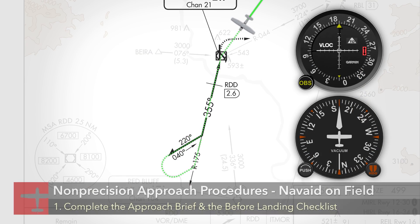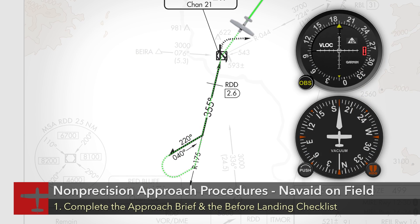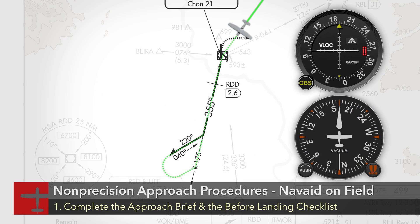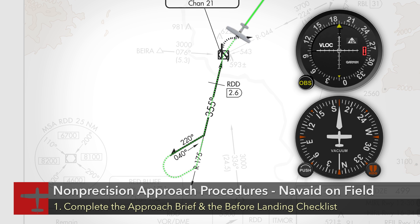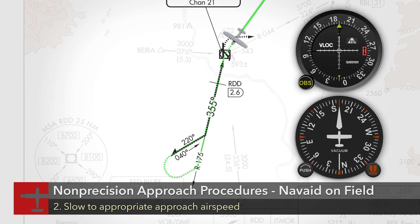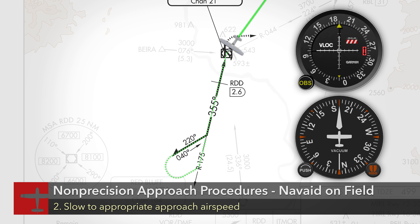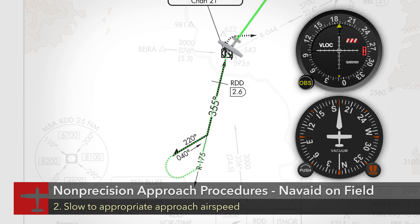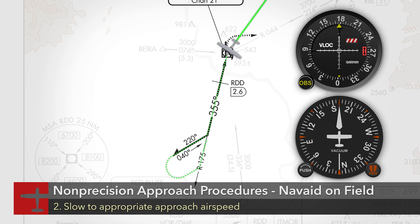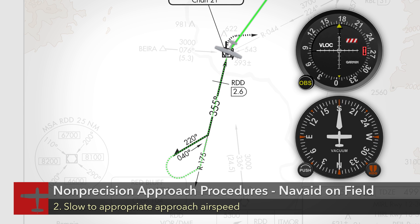To get started, first complete the appropriate instrument approach procedure brief and the before landing checklist. Next, reduce the airspeed so as to be at the appropriate instrument approach airspeed at the start of the initial approach segment.